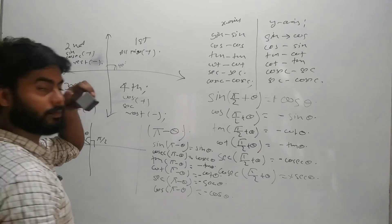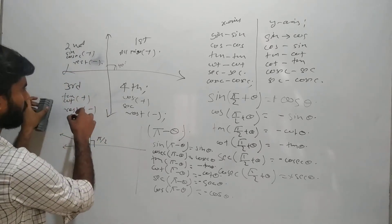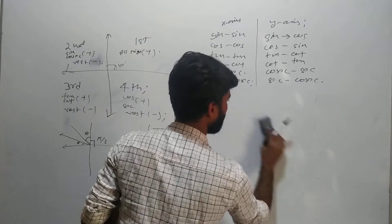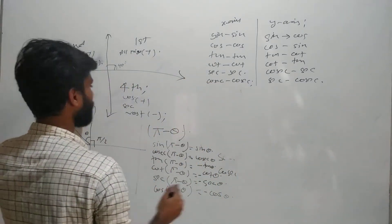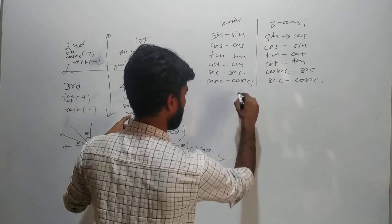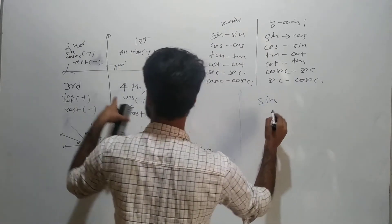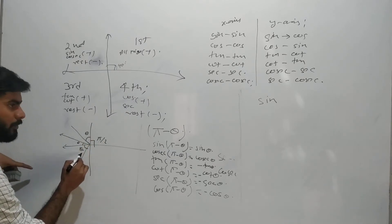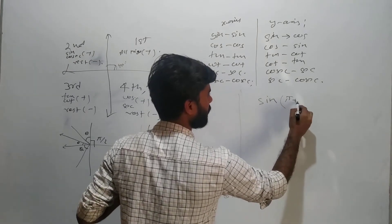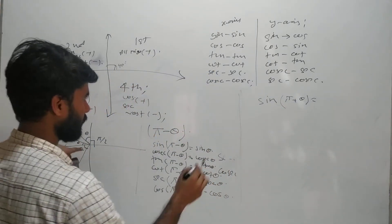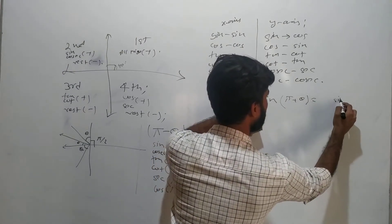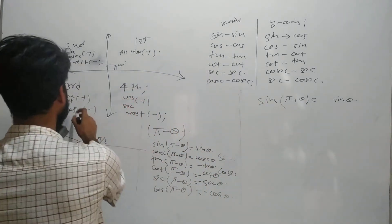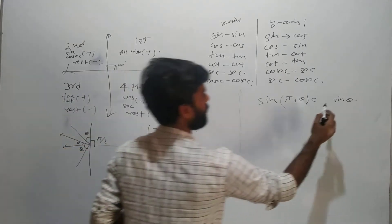Now we come to the third quadrant. In the same way we will do the third quadrant and the fourth quadrant. For the third quadrant: if theta is added to π, we get π + θ, which places us in the third quadrant. Sin(π + θ): since this is related to π (the x-axis), sin will remain sin. So sin(π + θ) = sin θ, and this is negative because in the third quadrant only tan and cot are positive.